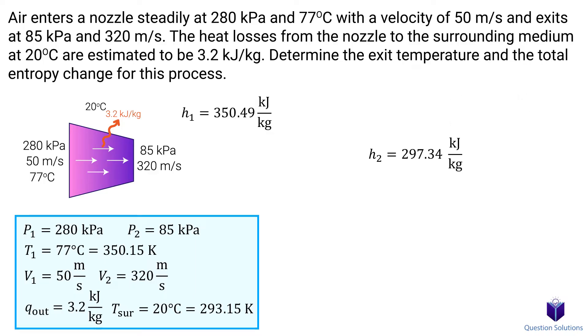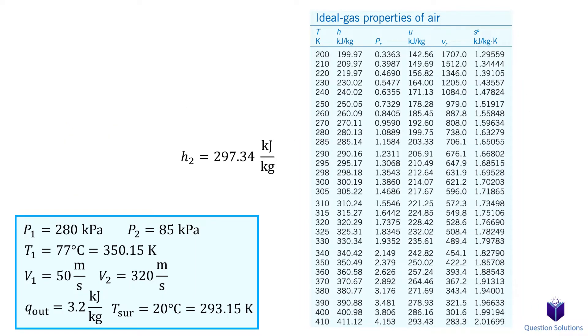Now that we have the final enthalpy, we can use this value to look for our final temperature. So we go back to our chart and work backwards. Here is the closest enthalpy value to our value. So this is our temperature.